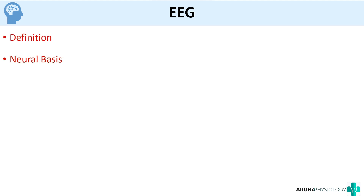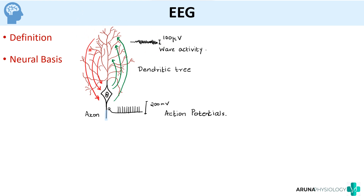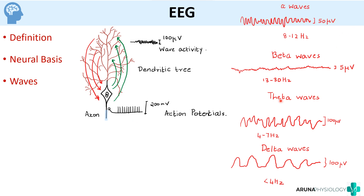To summarize, we have discussed the definition of EEG, the neural basis — in which EEG is a measure of the summated postsynaptic dendritic potentials and not the action potentials — and the different waves: alpha, beta, theta, and delta, plus gamma oscillations when the person concentrates. It is helpful to draw the wave diagram in your answer sheet, knowing the rough amplitude and frequency of each wave. Finally, we talked about the uses: epilepsy, subdural hematoma, brain tumor, brain injury, brain death, sleep disturbances, and conscious dysfunctions. Thank you.